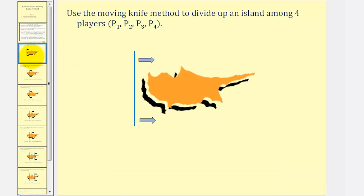So as an example, let's use the moving knife method to divide up an island among four players, P sub one through P sub four. The referee would start with this vertical line and start moving the vertical line to the right.